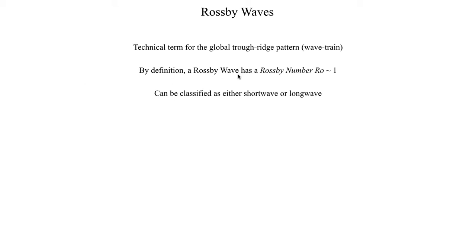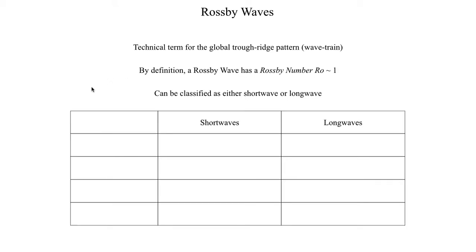I want to compare the characteristics of a short wave and long wave pattern and also talk about their behavior using a table. Typically for the length scale of short waves, we're talking about a Rossby wave that is about 100 kilometers to 1,000 kilometers in diameter. For long waves, we're talking about something much larger — several thousand kilometers wide. Short waves are called short waves because they're short, and long waves are called long waves because they're long.